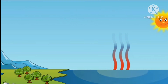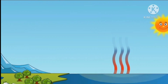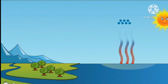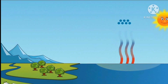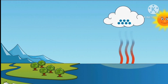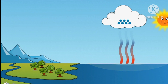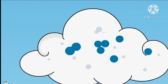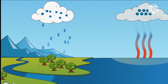These water vapours rise up. As they go very high, they get cooled and condensed to form tiny droplets of liquid water. In this way, clouds are formed. As more and more water vapours condense, the drops of water in the clouds get bigger and bigger. Finally, they fall back on the earth as rain.